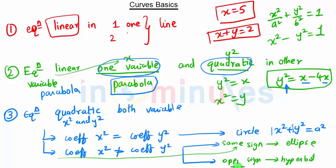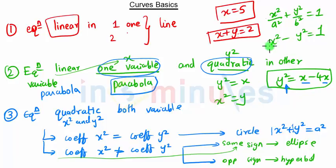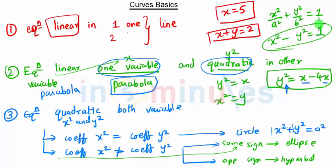If the signs are opposite, it is a hyperbola. For example, x² - y² = 1 — the coefficient of x² is 1 and the coefficient of y² is -1, so the signs are opposite, and this is the equation of a hyperbola.